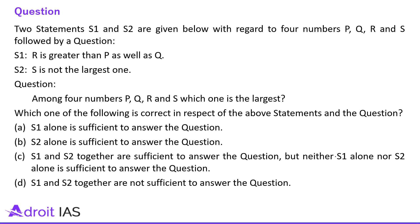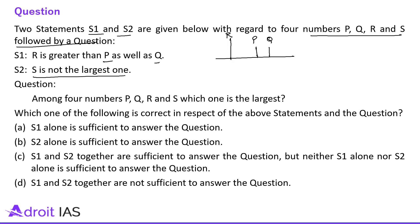Next question: two statements S1 and S2 are given below regarding four numbers P, Q, R, S, followed by a question. S1: R is greater than P and Q as well — but nothing can be said about the order of P and Q. S2: S is not the largest one. S can be anywhere — S can be less than R, equal to R, or between P and Q.